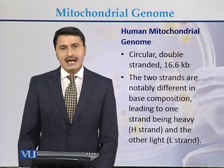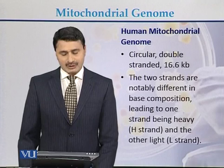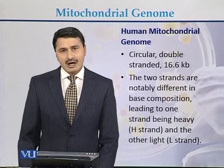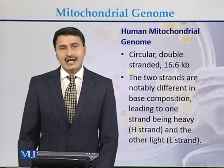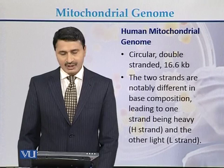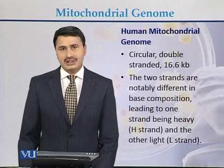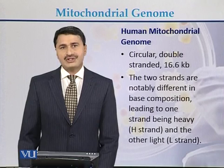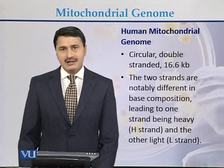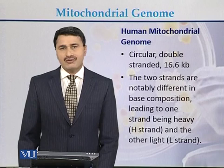The human Mitochondrial Genome is circular and double-stranded, with a size of 16.6 Kb. There are two strands of the Mitochondrial Genome in humans, and these two strands differ from each other in base composition. Due to this difference in base composition, one strand is called the H strand — H meaning heavy strand — while the other strand is called the L strand, where L stands for light strand.